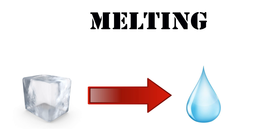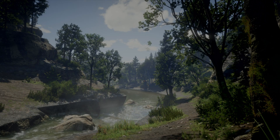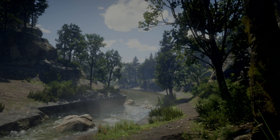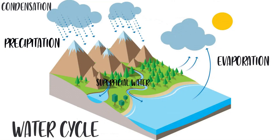After it melts, the force of gravity causes the now liquid water to always move downward. Some of the water flows on the surface in rivers, while other parts seep through the soil and move underground through aquifers, until eventually it reaches the sea, where it will once again evaporate.